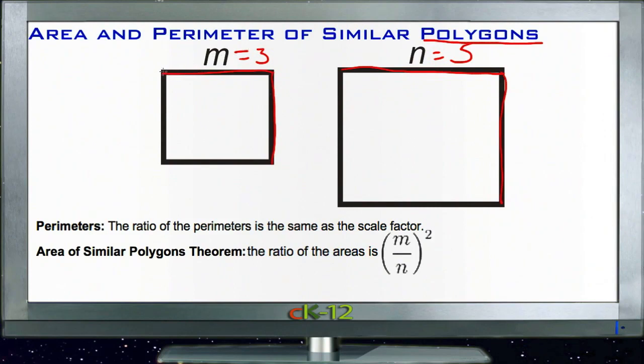Now that ratio will hold as long as we're measuring just distance. If I'm measuring just one side compared to another side, that ratio will hold. If I'm measuring the distance all the way around the outside of the figure, again, just measuring the distance, then that ratio will still hold.